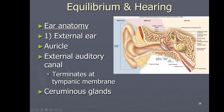The eardrum is called the tympanic membrane, and that's the termination of the external ear. Also in the ear canal, we have ceruminous glands which secrete cerumen, or earwax.